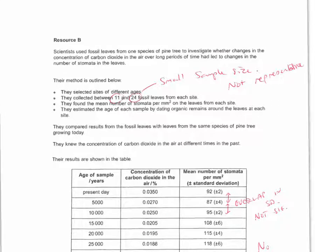The next data is looking at how carbon dioxide concentration changes, and the mean number of stomata per millimeter squared has changed for the last 30,000 years. So I've had to use some fossil evidence for this, and I selected at each age 11 to 24 fossils. It should immediately ring alarm bells. It's a small sample size. It's not representative.